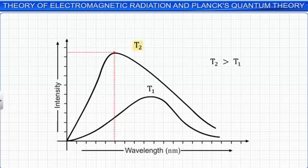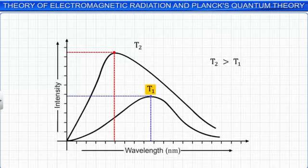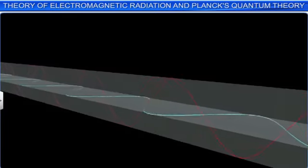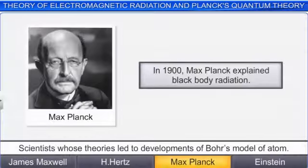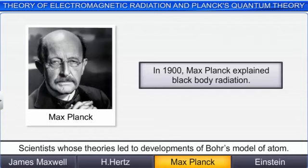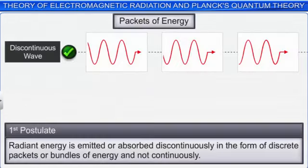At a given temperature, there is a wavelength at which the maximum intensity of radiation is emitted. But the position of this maximum intensity shifts towards higher wavelengths with decrease in temperature. These observations could not be explained by the electromagnetic wave theory of light. To account for these experimental observations, Max Planck in 1900 proposed that radiant energy is emitted or absorbed discontinuously, in the form of discrete packets or bundles of energy, and not continuously. This is the first postulate of Planck's theory.